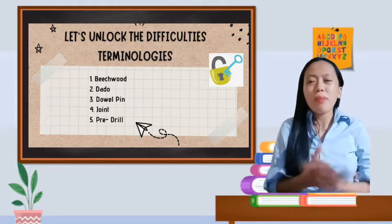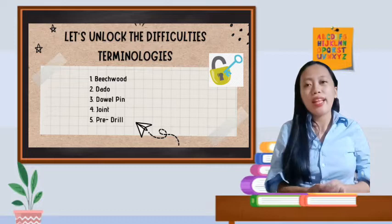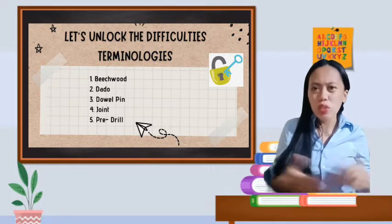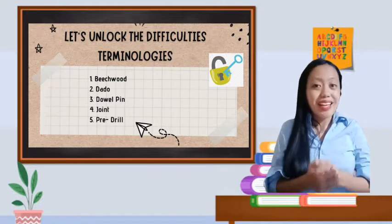Dado. It means it is cut across or perpendicular to the grain and it is thus differentiated from a groove, which is cut with or parallel to the grain.